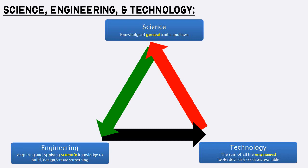Technology can be physical in the forms of tools, devices, machines, and gadgets, or technology can be abstract in the form of techniques, methods, algorithms, and processes. By this definition, the scientific method is an abstract technology. Mathematics is another example of an abstract technology.